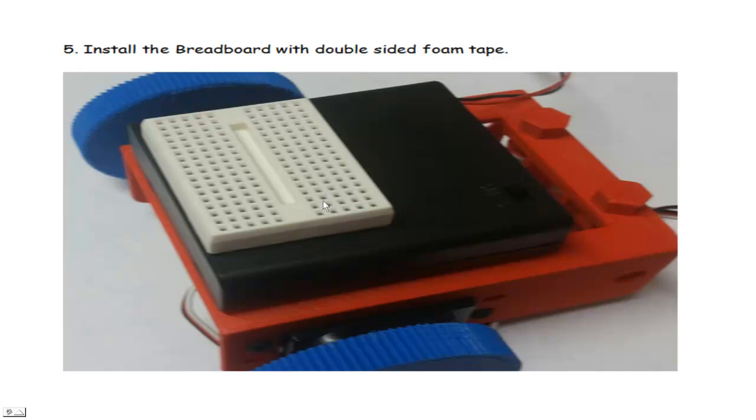Next we're going to attach the breadboard. Now these small breadboards do come with double-sided foam tape already attached to them. So all you need to do is peel loose that covering for one of the sticky sides, and then you can just put it here on the top of the battery. That seems to work pretty good.